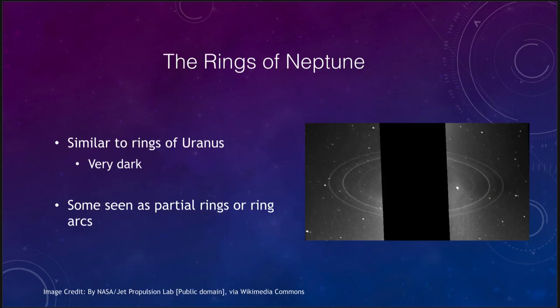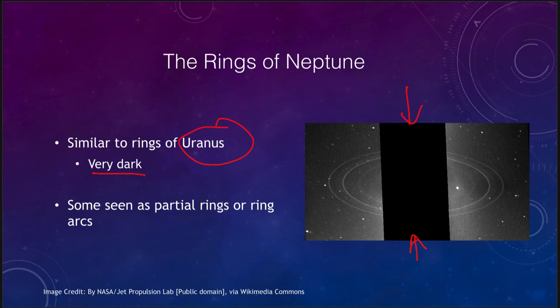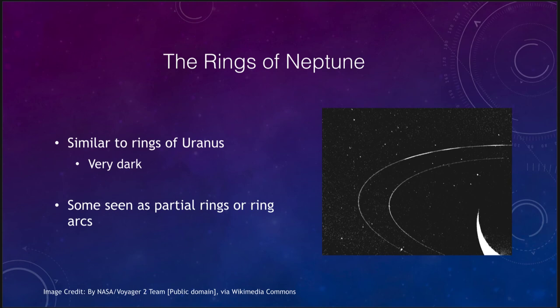The last of the objects with rings is Neptune. Neptune has very dark rings, in many ways similar to those of Uranus. We can see them here — we're blocking out the light from the planet, which would overwhelm the very faint rings. They are sometimes seen as arcs. Looking at another image, we see that there are denser areas of the rings and areas where there is less ring material. Unlike the rings of Saturn and Uranus, which seem to be relatively smooth, the rings of Neptune are sometimes seen as partial rings or even just ring arcs.